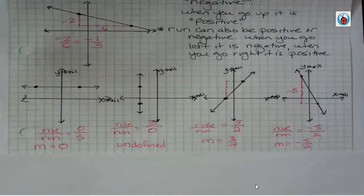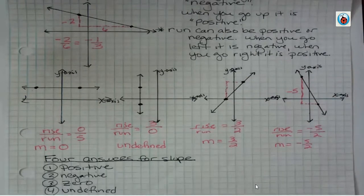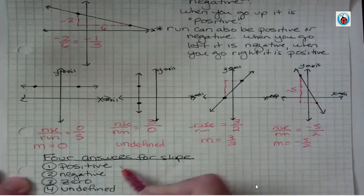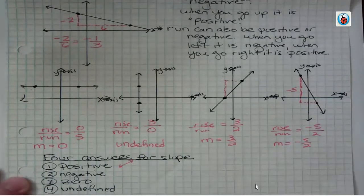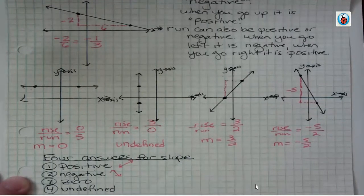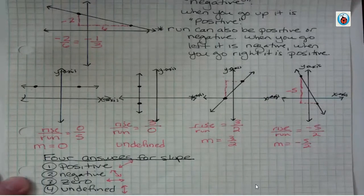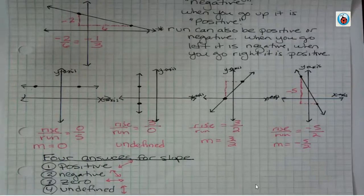So what I want to leave you with is that there are four things that can happen when you're finding slope: you can get a positive slope and see a line that rises from left to right; a negative slope and see a line that falls from left to right; a zero slope, which is a horizontal line; or an undefined slope, which is a vertical line. Those are the four things that can happen with slope. That's it for this video — have a fantastic day, and remember, always practice.